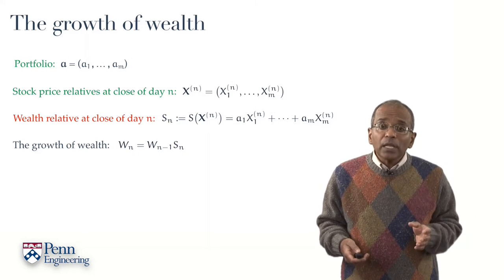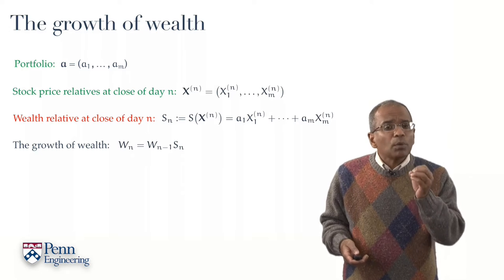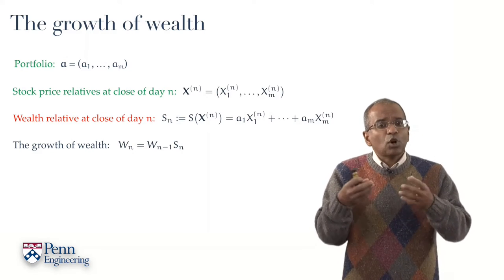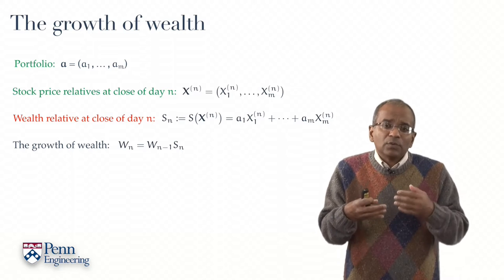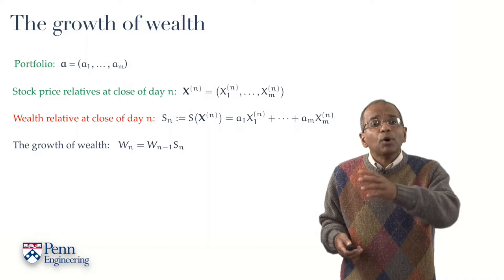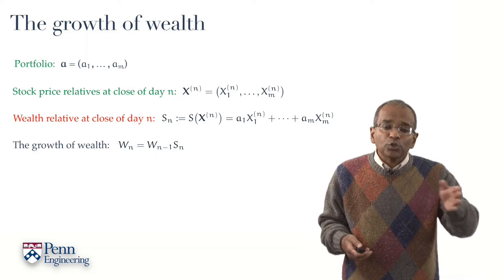The progression of wealth is governed by the stock price relatives for each trading day. So for day n you have a stock price relative vector X with superscript n which tells you how much individual stocks have gone up or down in each of those stocks.